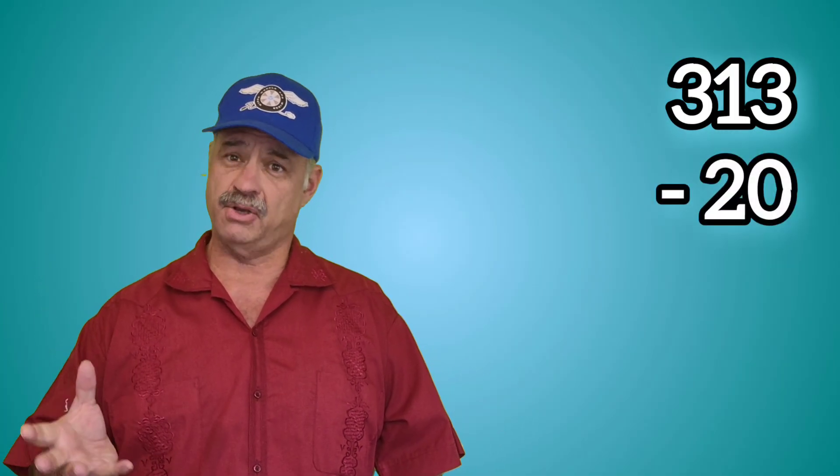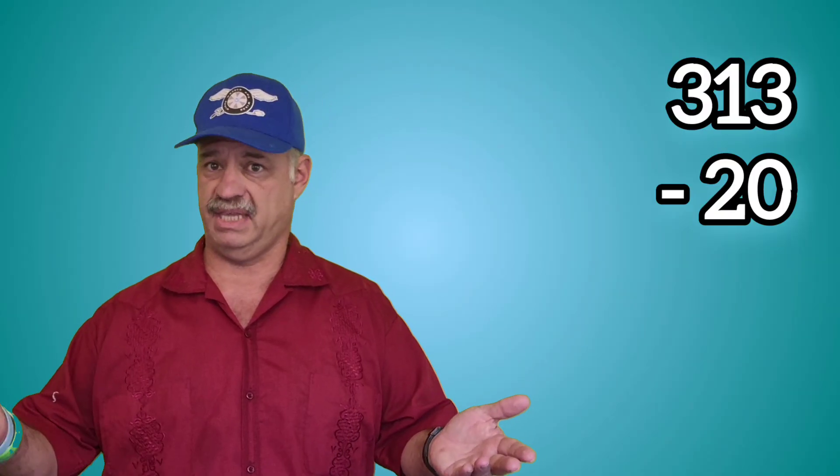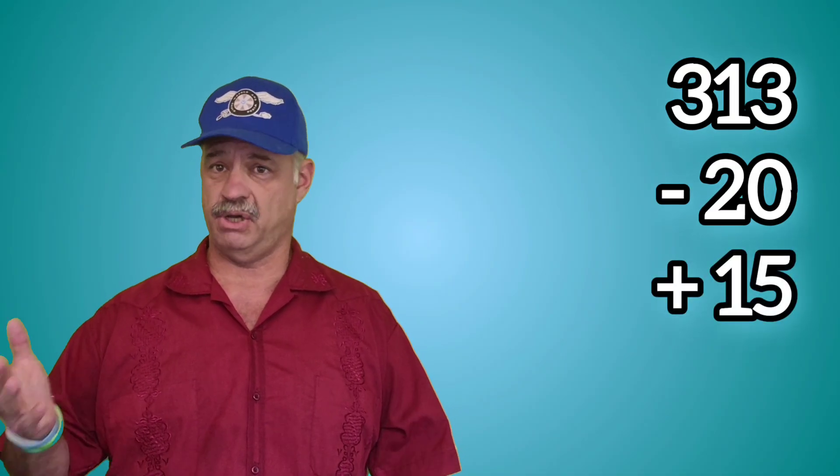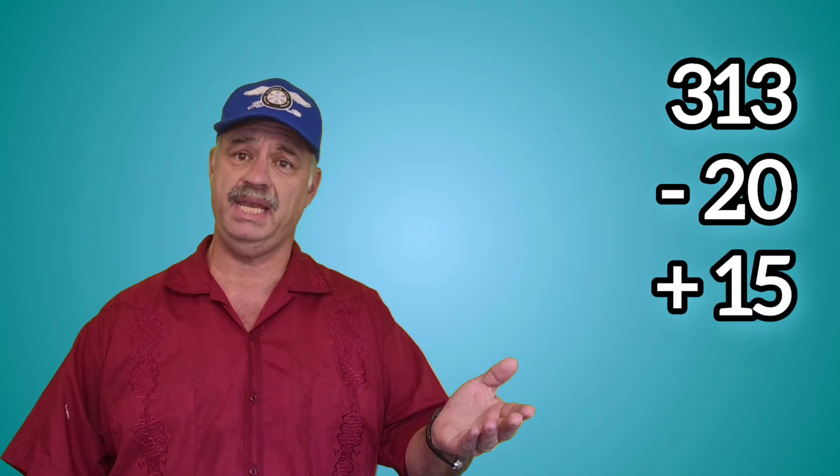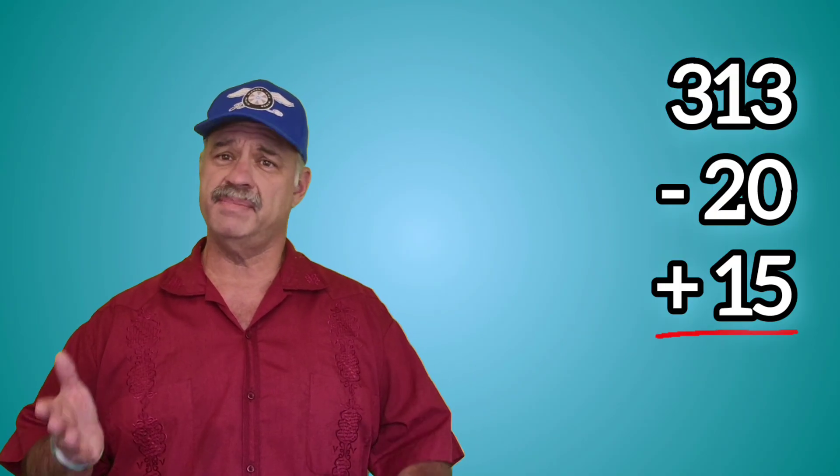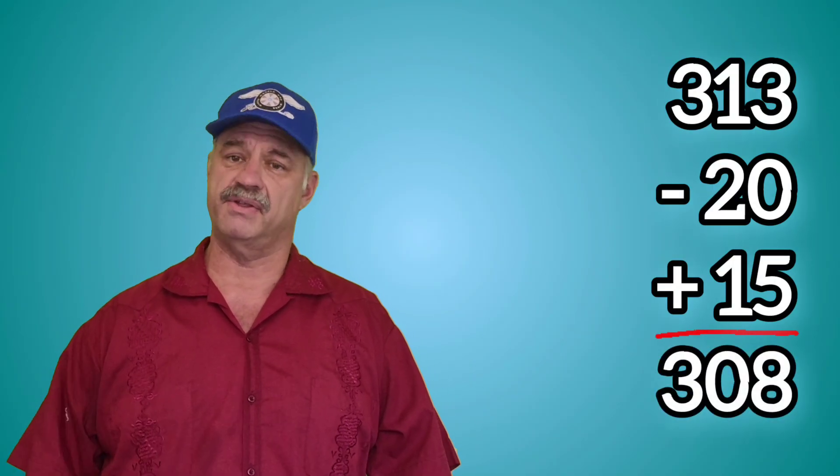Now, of course, you can probably subtract about 20 miles for the range extender weight because the REX always gets a lower range than the BEV-only version. But you can also add about 15 miles because most people report getting much over 65, all the way up to 80 miles from the range extender. So no matter how you do the math, it still comes at or above 300 miles of range.